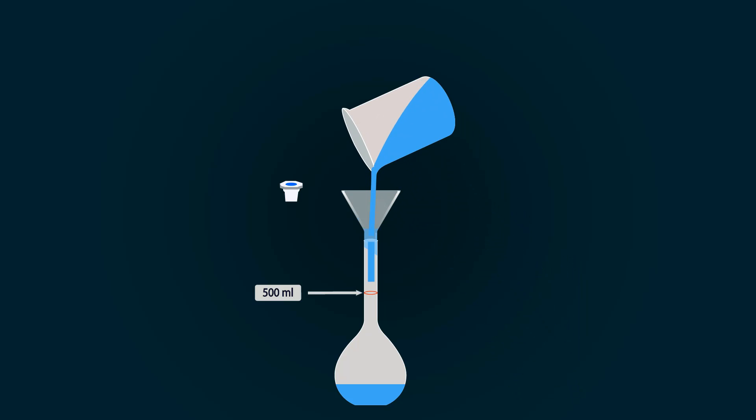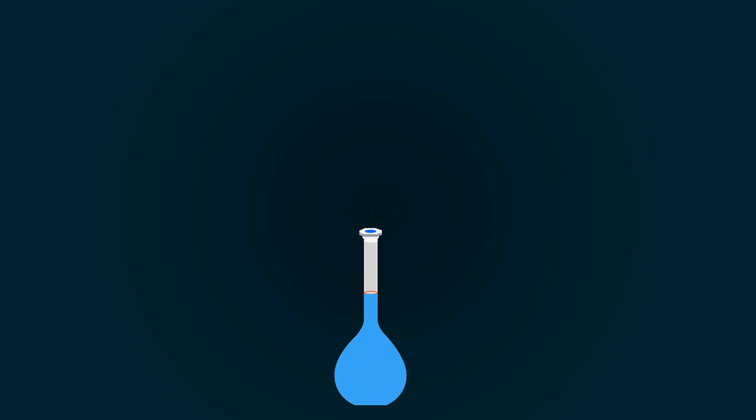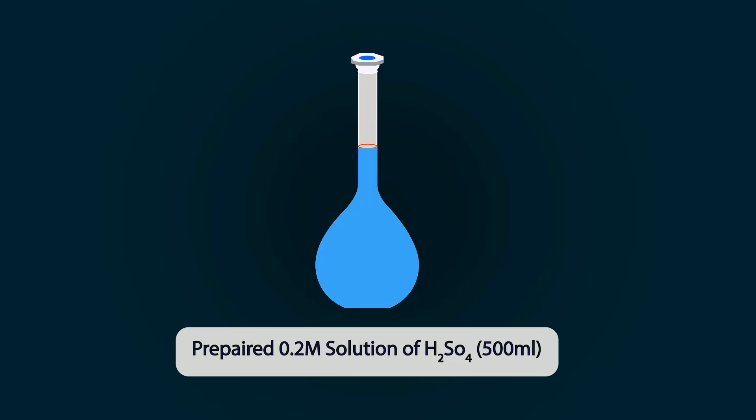Now add distilled water up to the 500 milliliter mark. Close the measuring flask and you will get 0.2 molar solution of H₂SO₄. You can store it in any bottle you want.